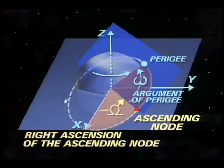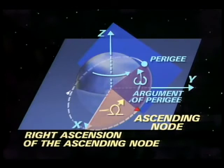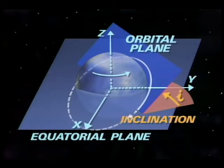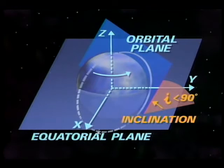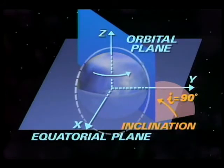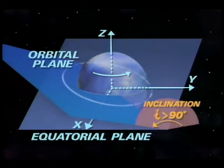The argument of perigee is the angle between the ascending node and the point of perigee, measured in the orbital plane in the direction of spacecraft motion. Inclination is the angle between the equatorial plane and the orbital plane. A satellite which has an eastward velocity component at the ascending node has an orbital inclination between 0 and 90 degrees — such an orbit is called a prograde orbit. A satellite which moves due north at the ascending node is in a polar orbit, with an orbital inclination of exactly 90 degrees. A satellite with a westward velocity component at the ascending node is in a retrograde orbit, with an orbital inclination between 90 and 180 degrees.